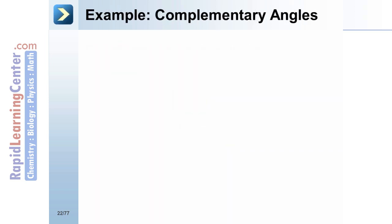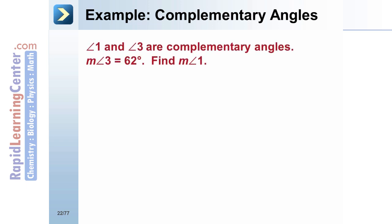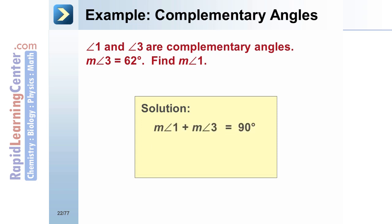Example: Complementary Angles. Angle 1 and Angle 3 are complementary angles. The measure of Angle 3 is 62 degrees. Find the measure of Angle 1. Solution: By definition, complementary angles have a sum of 90 degrees. Therefore, the measure of Angle 1 plus the measure of Angle 3 equals 90 degrees. Substituting: Angle 1 plus 62 degrees equals 90 degrees. Subtract 62 from both sides. The measure of Angle 1 is 28 degrees.